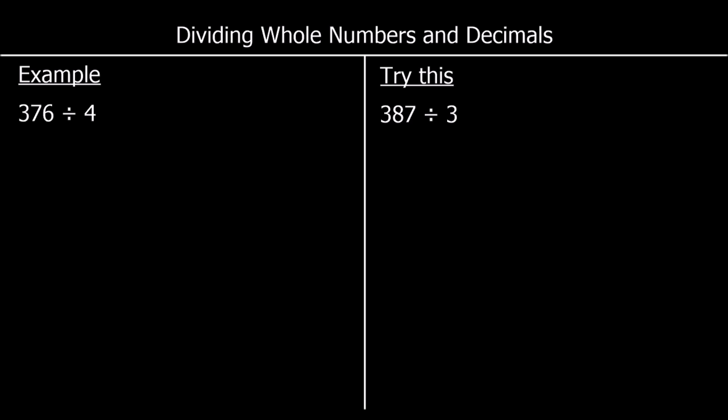In this question, we're being asked to divide 376 by 4. So how many times does 4 go into 376? I'm going to use the process that's sometimes called short division to answer this. That means I'm going to have a 4 on the outside and 376 on the inside.